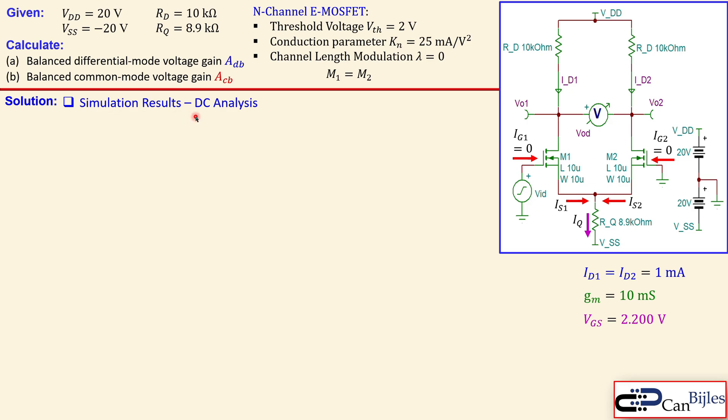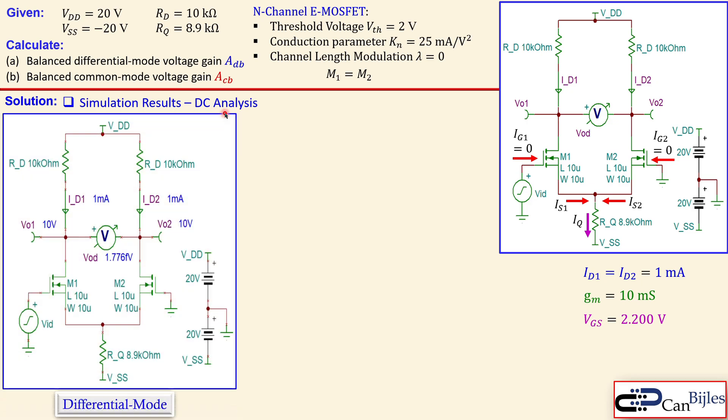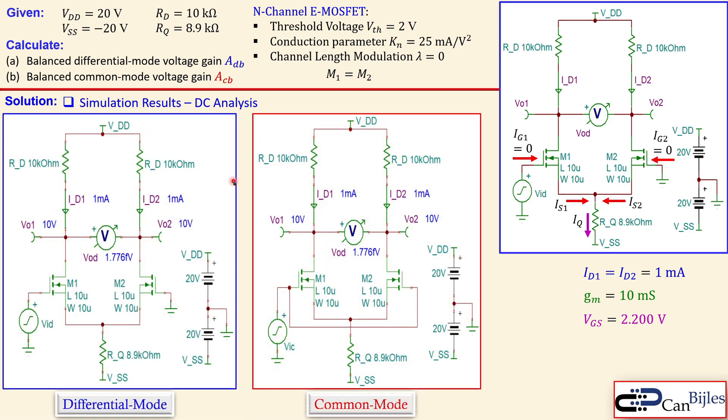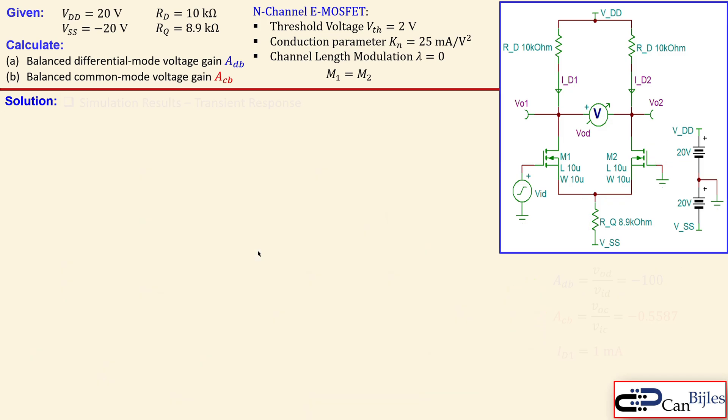Looking now at the simulation results for the DC analysis, this for the differential mode, this is for the common mode circuit. You see that indeed it is 1 milliampere for ID1 and ID2, and you see that for the common mode circuit. We have verified our calculation for the drain current, so this is checked.